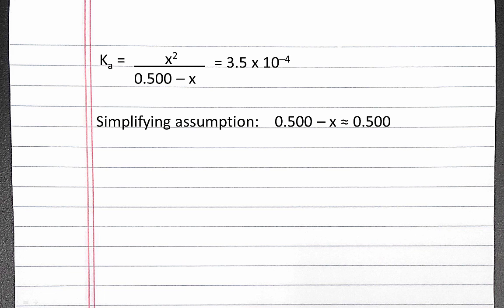To solve for x, we can make a simplifying assumption. We can assume that 0.5 minus x is approximately equal to 0.5 because our Ka value is much smaller than 1, so there will be a relatively small concentration of products at equilibrium. If this simplifying assumption is not valid, we'll have to come back to our Ka expression and solve for x using the quadratic formula.